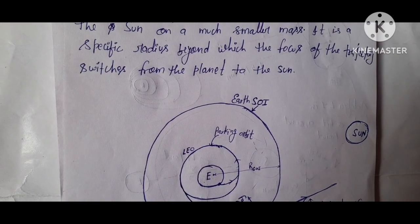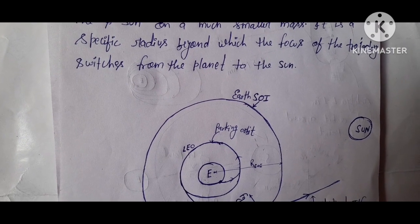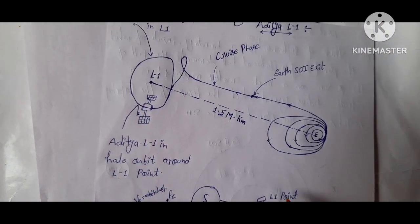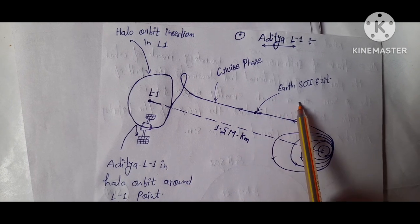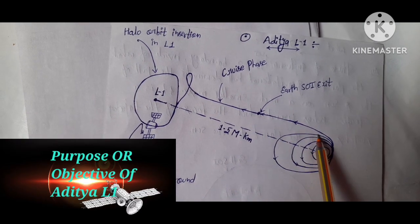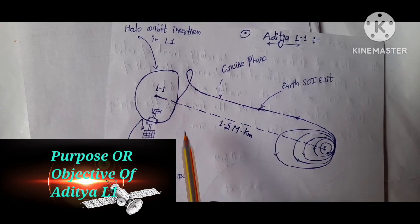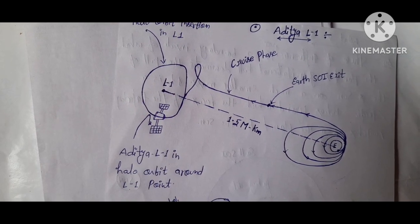The SOI is taken as the boundary where the trajectory switches. Boundary where the trajectory switches is, you see in Aditya L1 trajectory here, SOI affected and this is a mass switches away from the other planets like Sun.